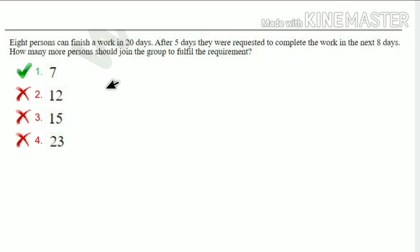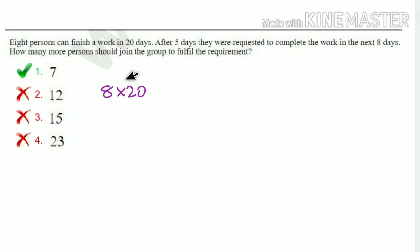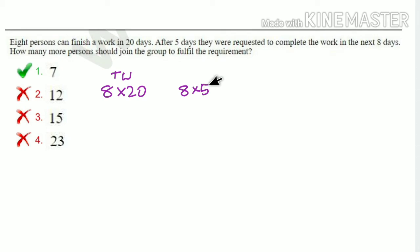So, 8 persons can complete the total work. This is the total work. 8 persons can work for 5 days, so we calculate the work already done. We need to find how much work remains and how many persons are needed to finish in 8 days.